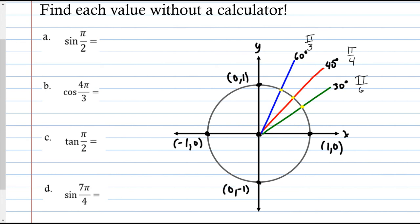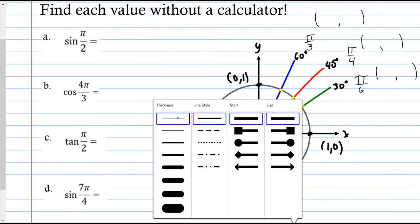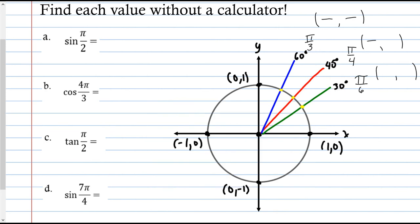Here's a technique for memorizing the coordinates. All coordinates for pi over 6, pi over 4, and pi over 3 are fractions divided by 2. And the numerators are all square-rooted. So every coordinate looks like √(something) over 2.